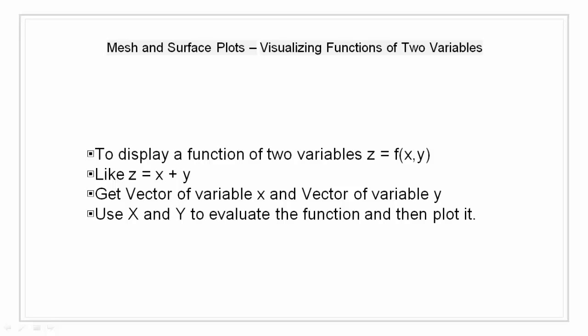The mesh grid function transforms the domain specified by a single vector or two vectors into matrices that are used in evaluating functions of two variables. Mesh grid is used to create vectors x and vector y from single dimensional or two-dimensional matrices so that those vectors can be used to solve the functions like z equals x plus y or z equals x square plus y square.